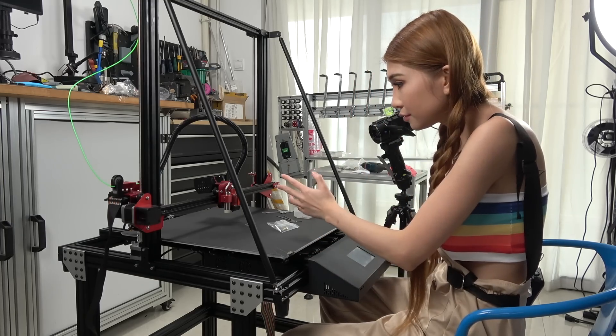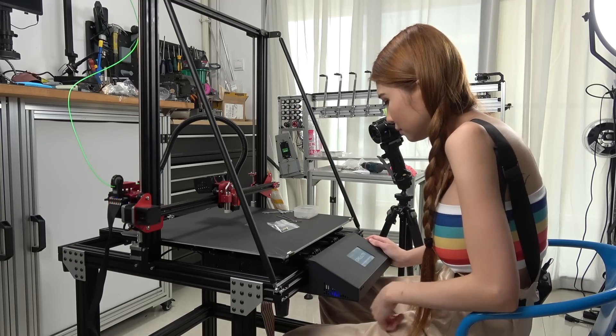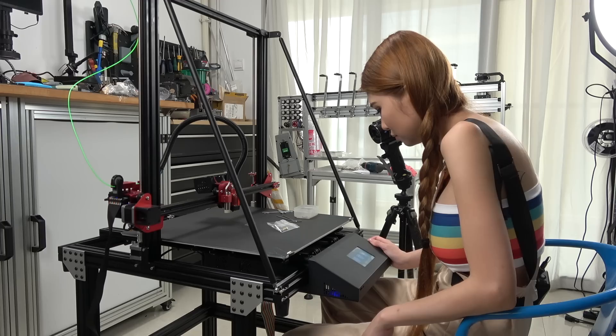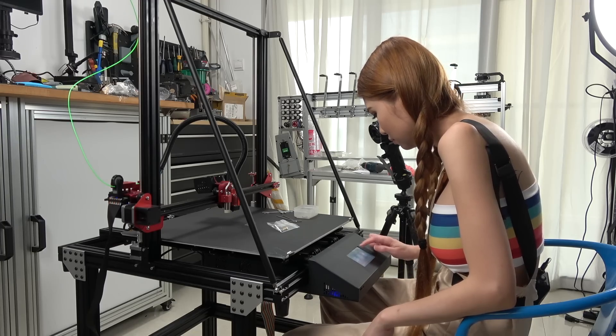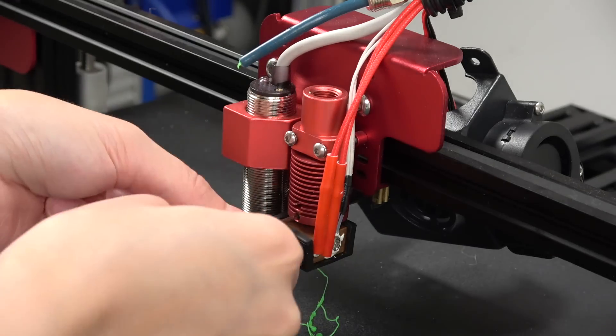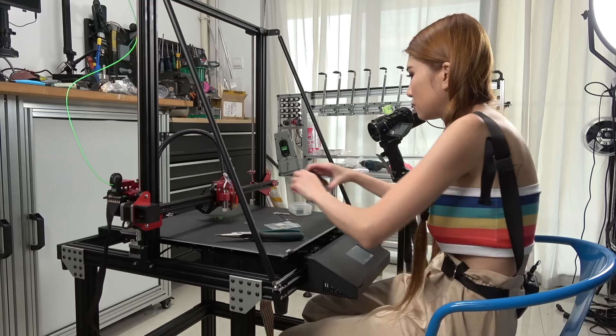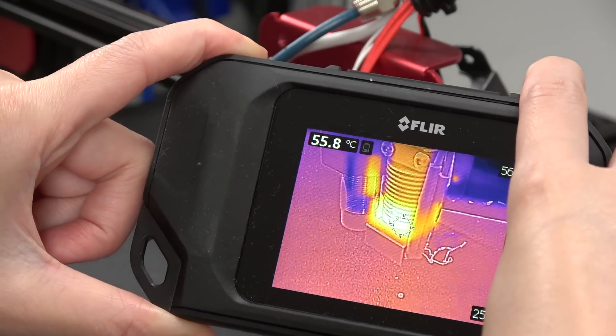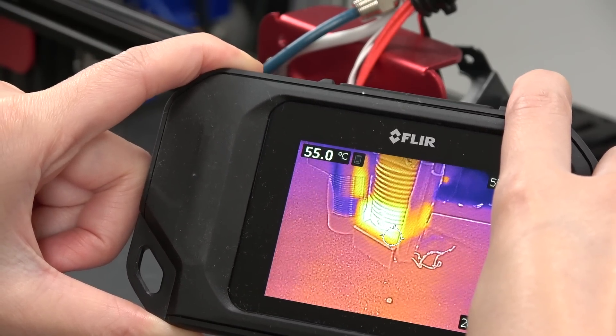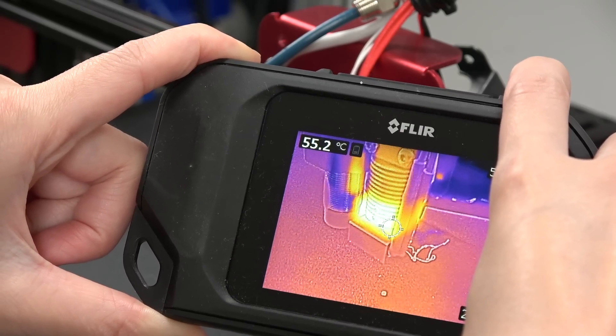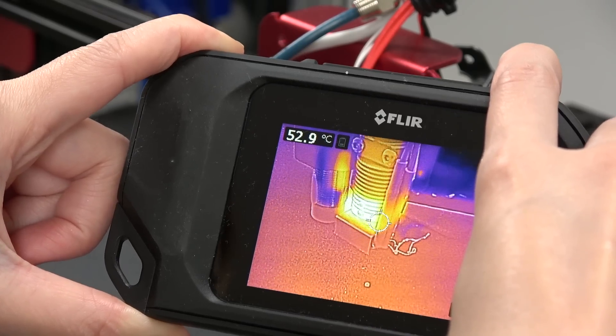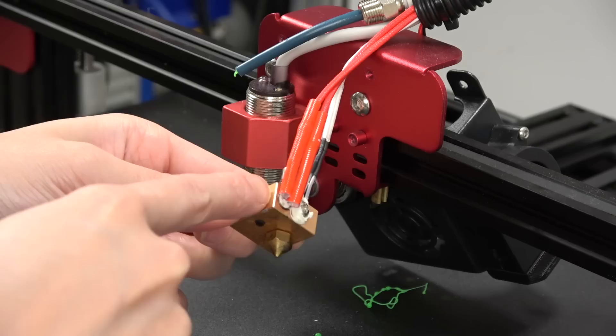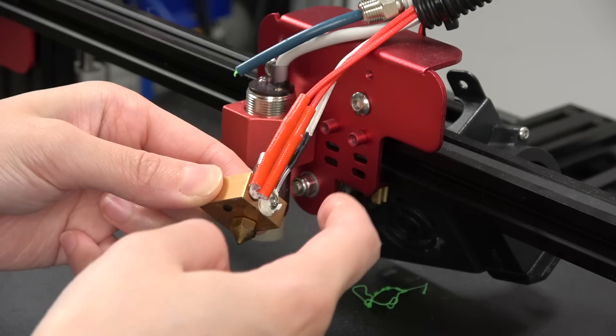So I need to heat the hot end up first and then I can take it apart. It's still a little bit hot so I'm going to wait till it cools down to 50. So this is the heating element and this is the temperature sensor. I'm going to move it to the new block.